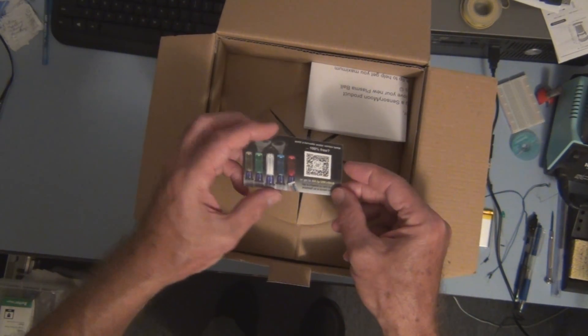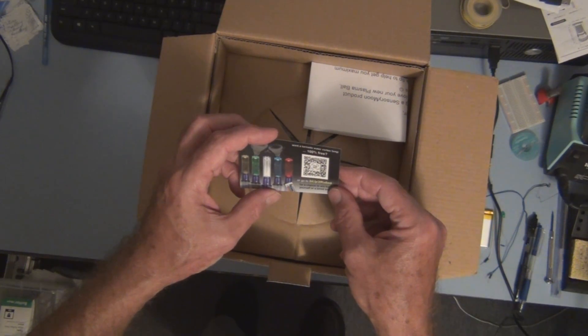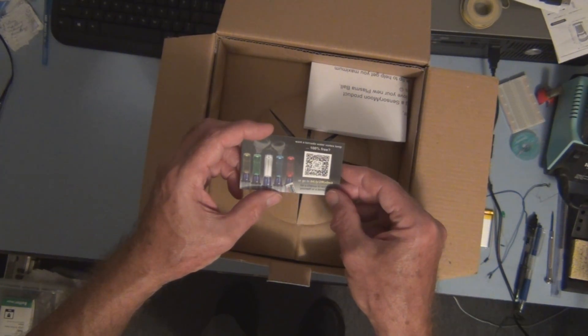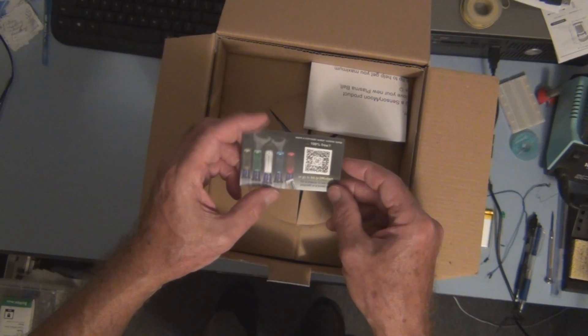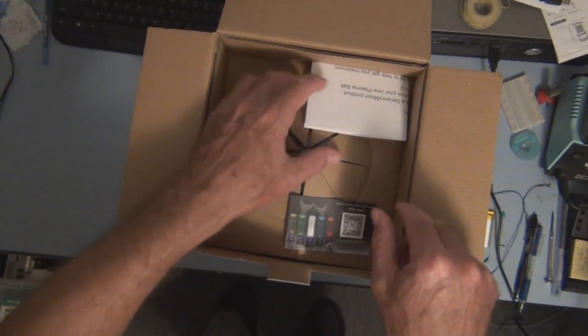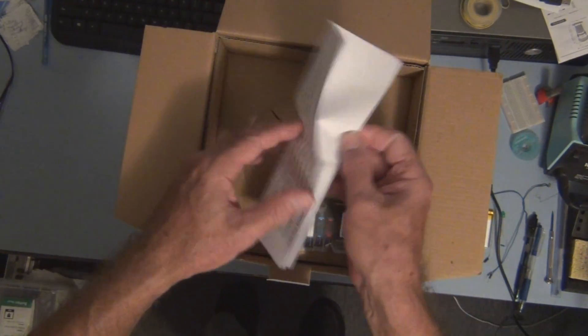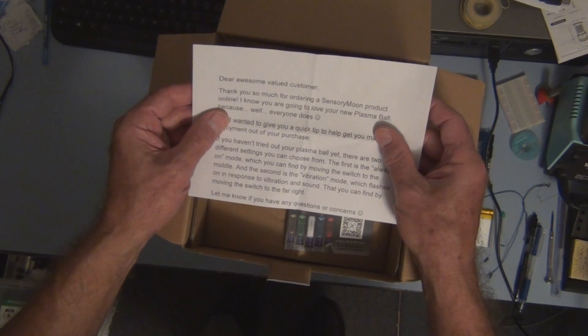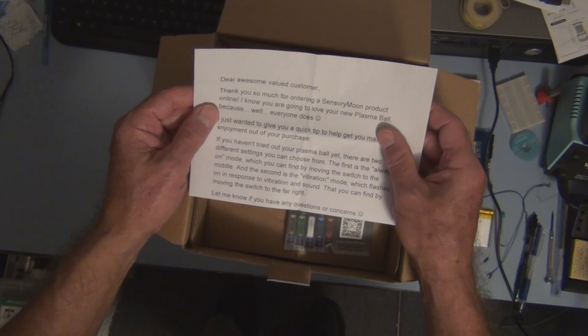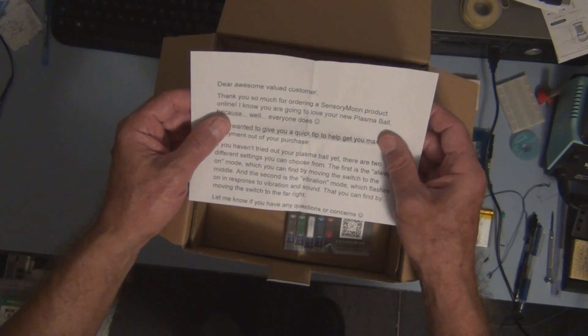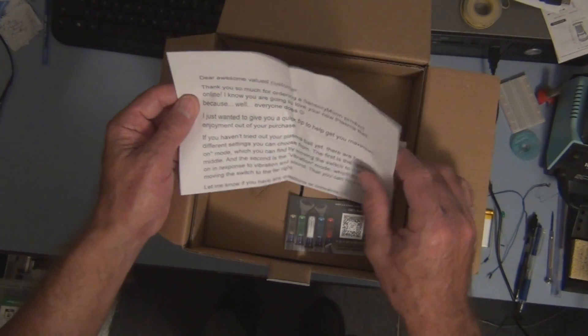So we get the company card here. I think Tornado Water Vortex Lamp. Thanks for ordering Sensory Moon product online.